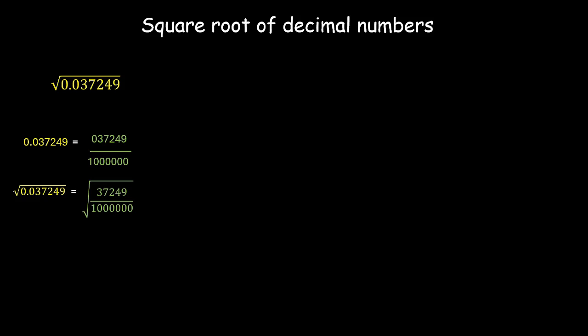Now we know that root of a/b is equal to root of a divided by root of b. So this means root of the numerator divided by the root of the denominator. Now let's keep the numerator as it is. Can we write this denominator as 10 raised to the power 6? And root of 10 raised to the power 6 is actually 10 raised to the power 6 raised to the power half.